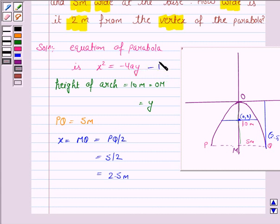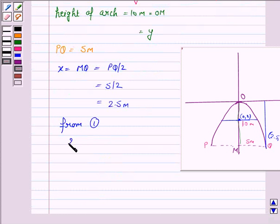From the equation, we have (2.5)² = -4a(10), which implies a = -6.25/40.